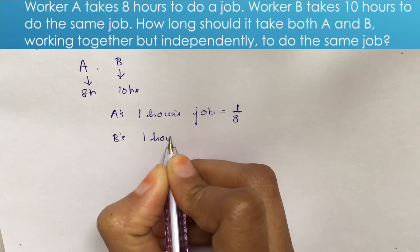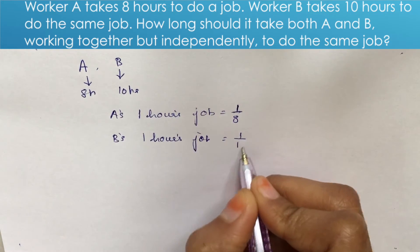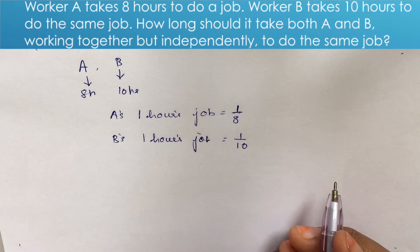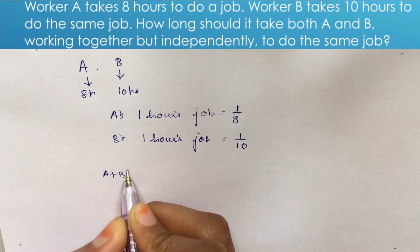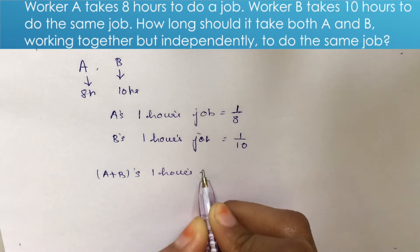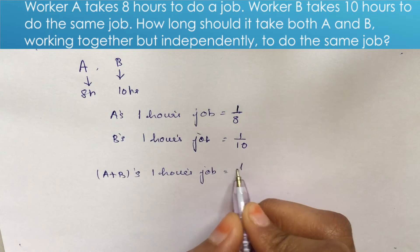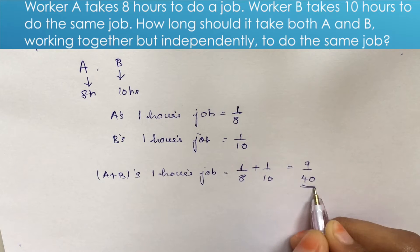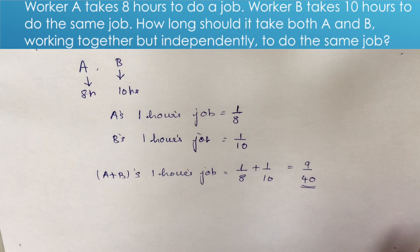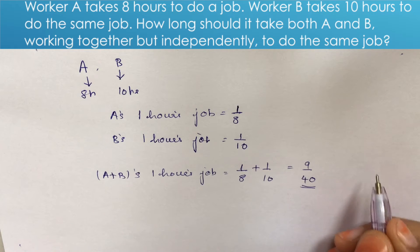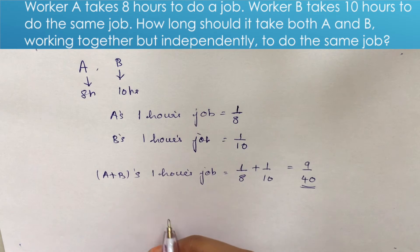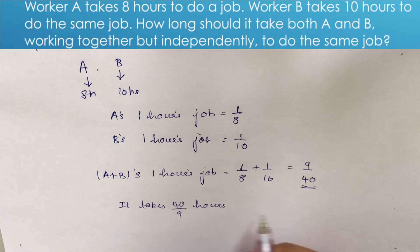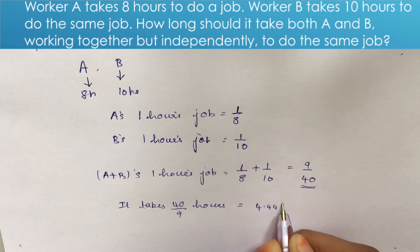B's 1-hour work is 1/10 of the job. A plus B together in 1 hour do 1/8 plus 1/10, which is 9/40 of the job. To complete the full job, the time required is 40/9 hours, which is approximately 4.44 hours.